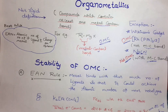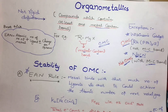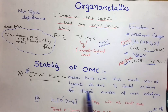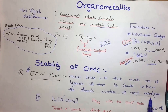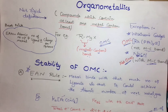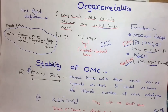Now we will discuss the main topic: the stability of OMC. The 18-electron (EN) rule is the most important concept here. The basic definition is that a metal binds with enough ligands to achieve the atomic number of the next noble gas. If the sum of all electrons on a metal plus the electrons donated by the ligands equals a noble/inert gas configuration, that compound follows the 18-electron rule and is considered stable.